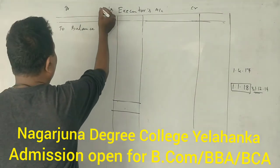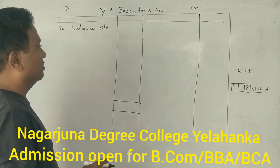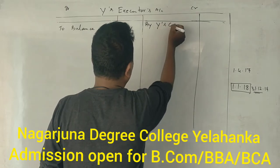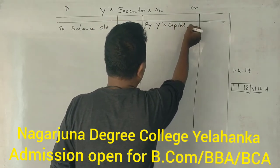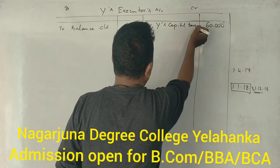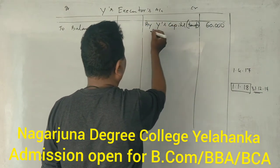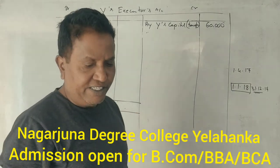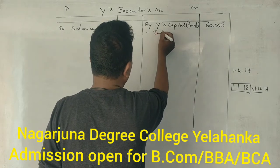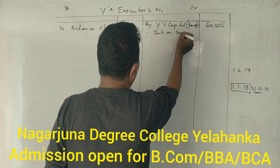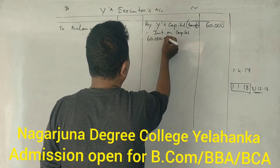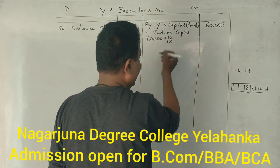We prepare Y's executor's account. First, Y's capital is 60,000. Next, we consider the transfer of reserve fund. Then, interest on capital: 10% on Y's capital balance is calculated and entered into the account.